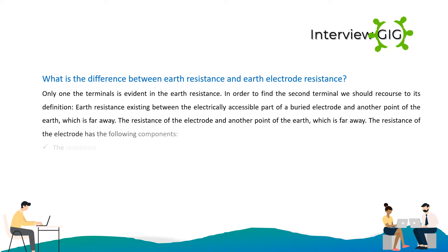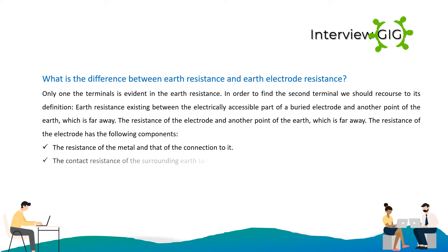The resistance of the electrode has the following components: the resistance of the metal and that of the connection to it, and the contact resistance of the surrounding earth to the electrode.